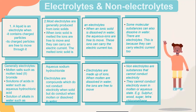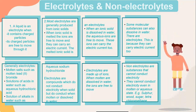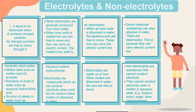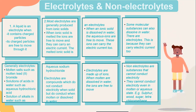Electrolytes are compounds which do not conduct electricity when solid but do conduct when molten or dissolved in water, because the ions are free to move. Non-electrolytes are substances that cannot conduct electricity — they cannot conduct electricity even in molten or aqueous state. For example: sulfur, wood, sugar, and tetrachloromethane.